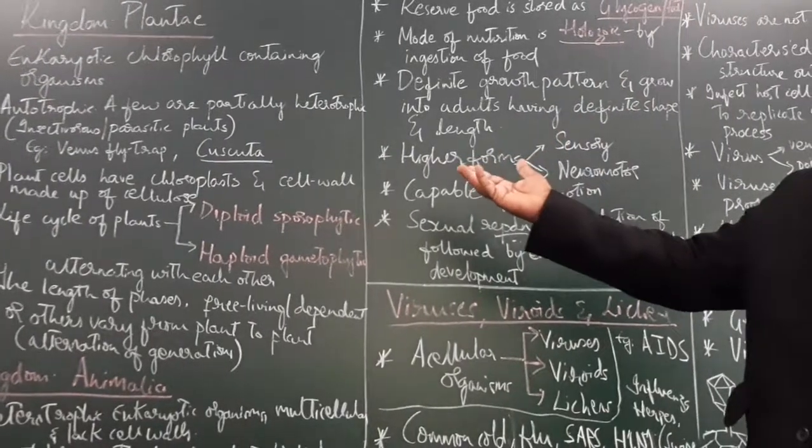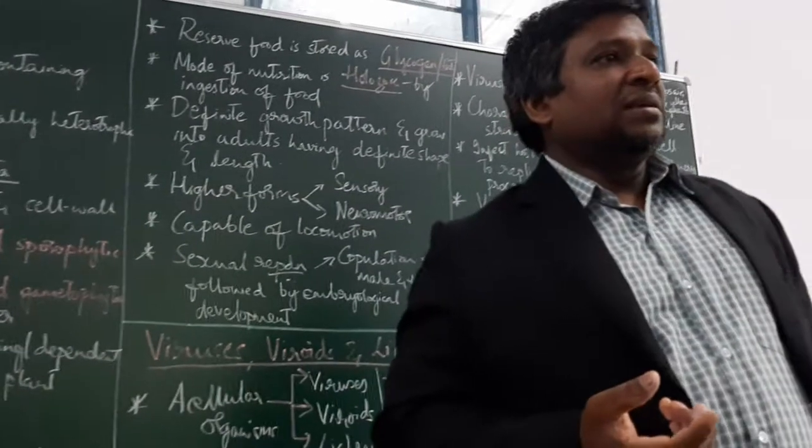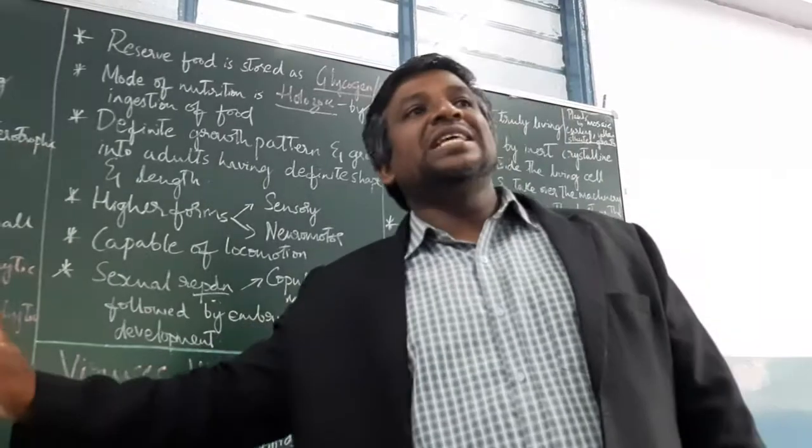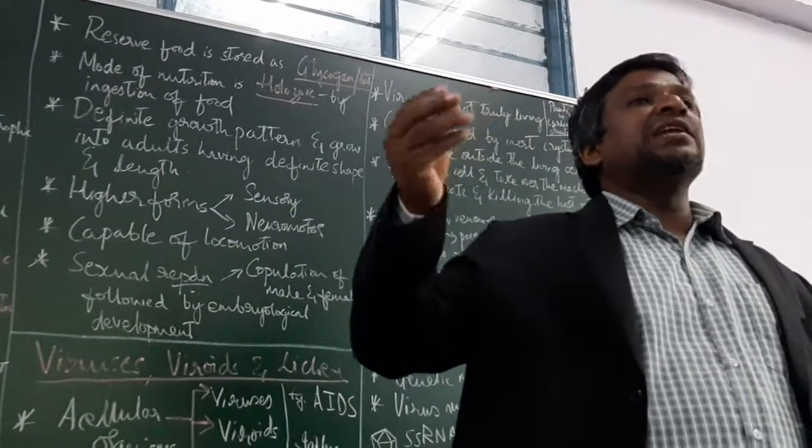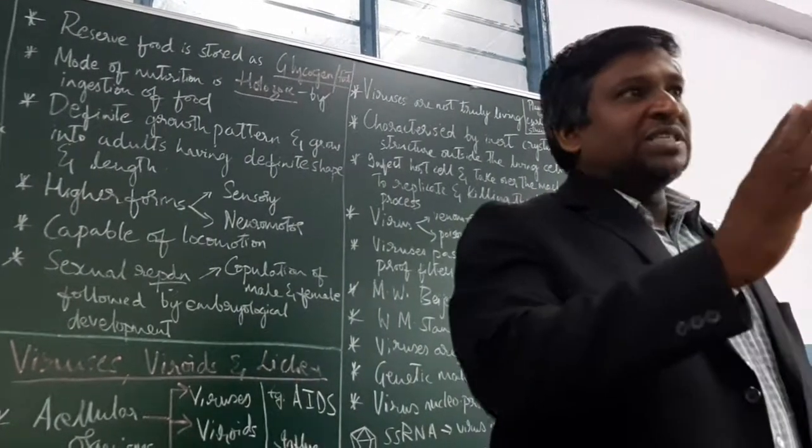The next one is they have cell wall made up of cellulose. In case of fungi, it was cell wall made up of chitin and cellulose. Here it is only cellulose. Sometimes hemicellulose and pectin will also be there. But they have cell wall; animals do not have cell wall.